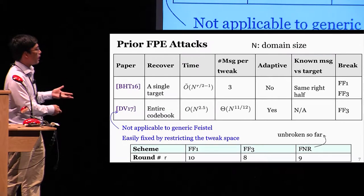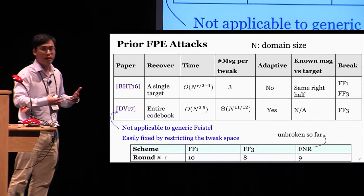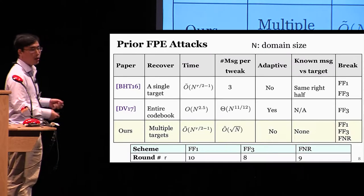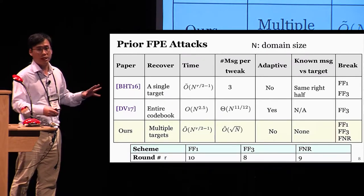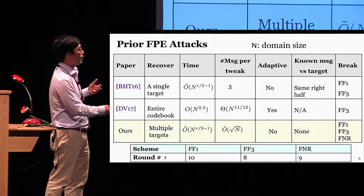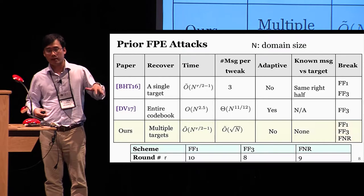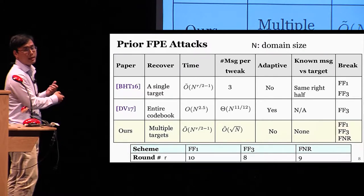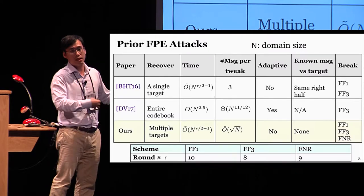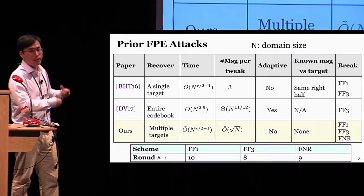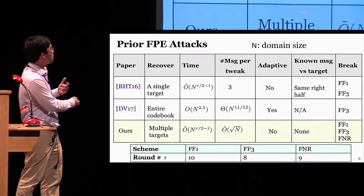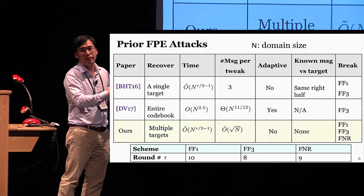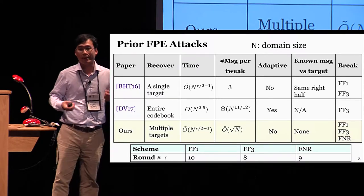The ideas of none of these attacks seem applicable to FNR, although it is just another generalized Feistel structure, which makes FNR appear to be an interesting alternative to NIST standards. However, today I will show an attack on the generic Feistel structure that applies to both FF1 and FF3, and our idea can actually be recast to break FNR as well. While our attack is somewhat similar to the VHT attack, we need no correlation between the known messages and the targets. By relaxing the known messages requirement, we can recover multiple targets instead of just a single one, and we only need a moderate number of known messages per tweak, so our attack seems quite deployable.